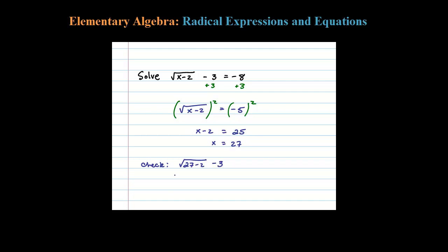Square root of 27 minus 2, that's 25, and that equals 5. 5 minus 3 certainly does not equal negative 8. So the answer that we did get, we're going to throw it away. It's an extraneous answer.